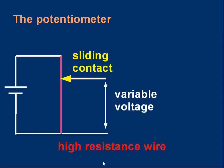So what is a potentiometer? Well, the simplest potentiometer you could make would simply be a piece of high resistance wire. I've shown that in red on the diagram. We connect it to a cell and the current will flow around the circuit through the high resistance wire.